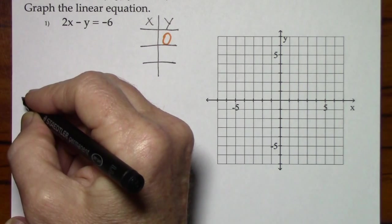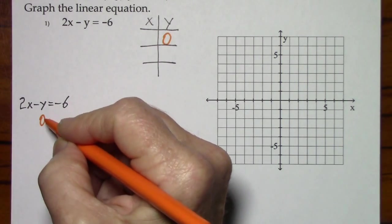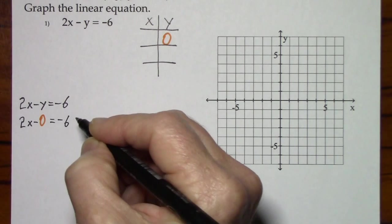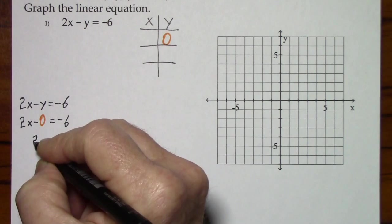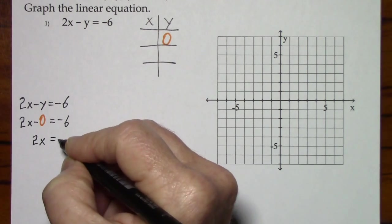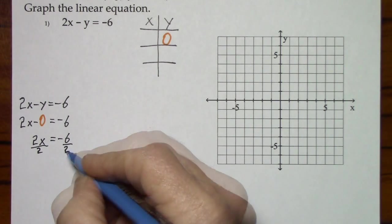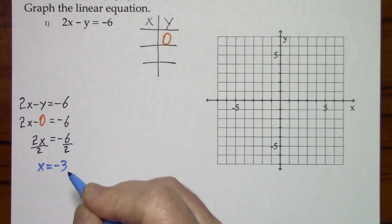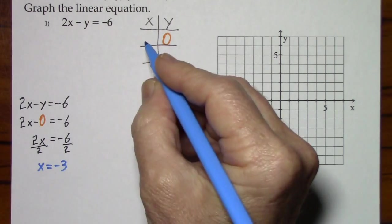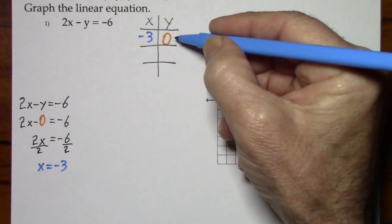Start with your original equation, put in a 0 for y, and we see that x is equal to a negative 3, so we put that in our chart. This gives us our first ordered pair.